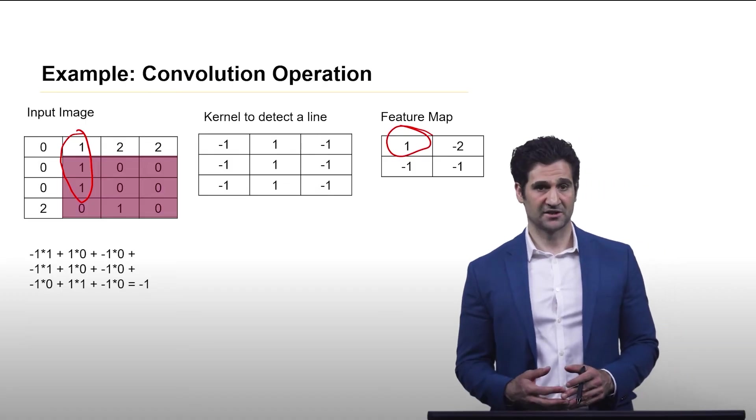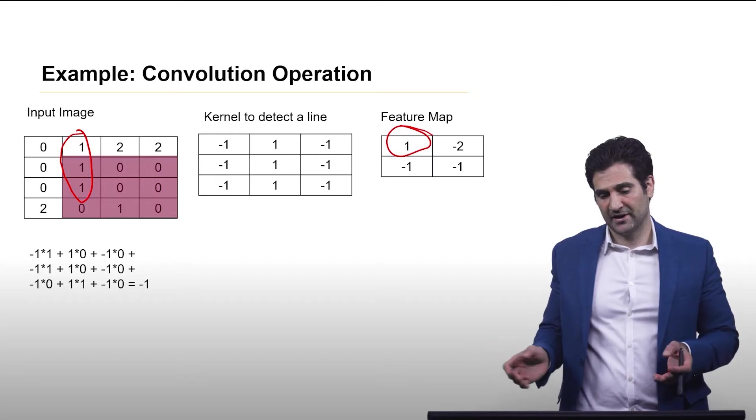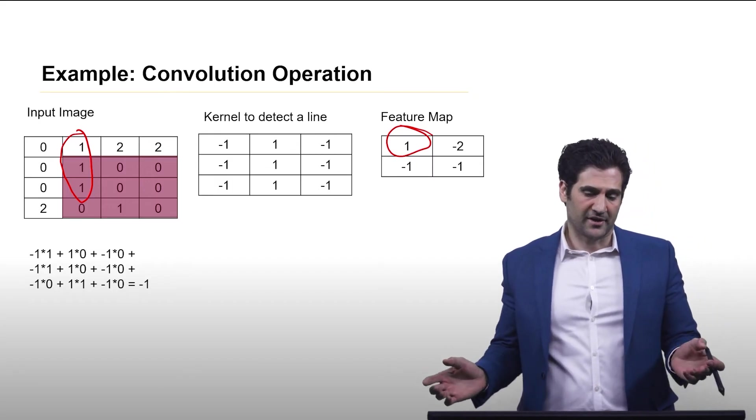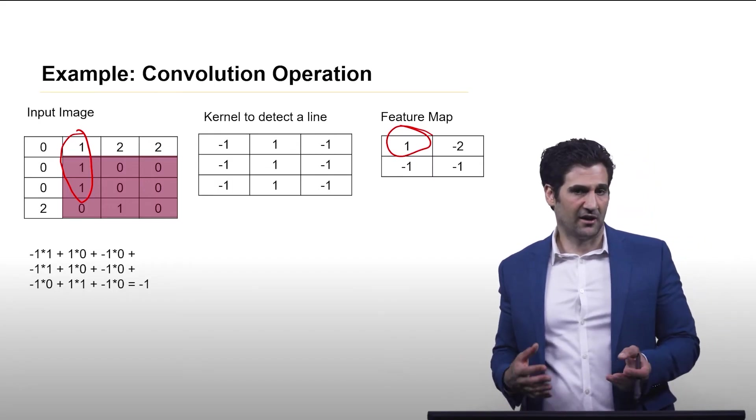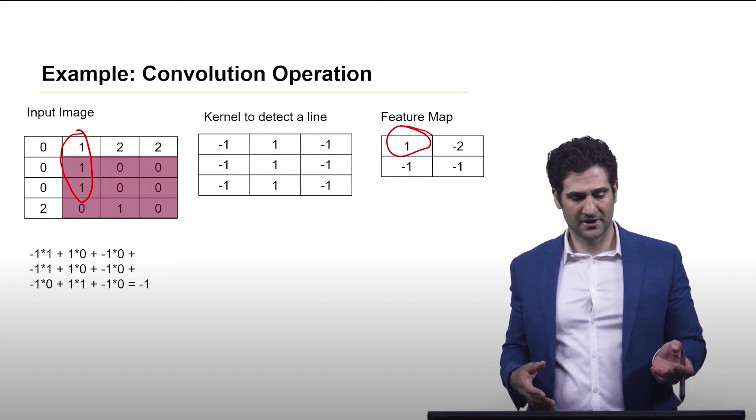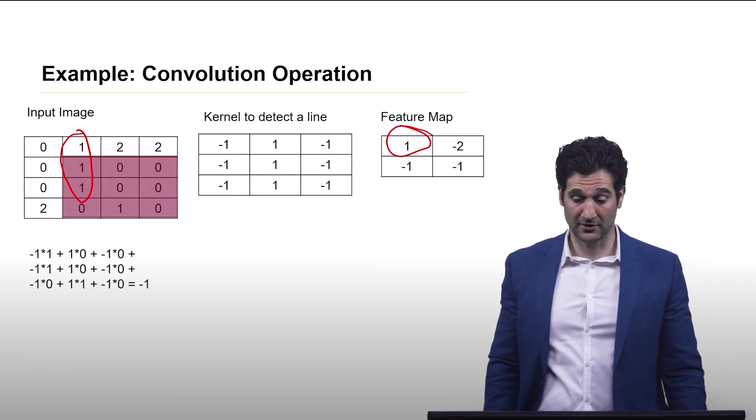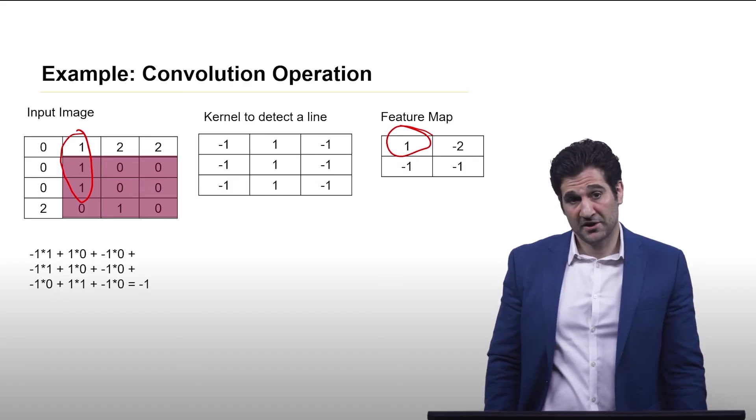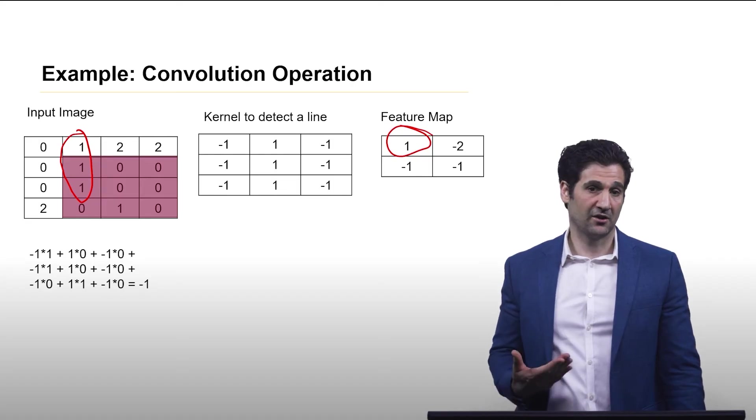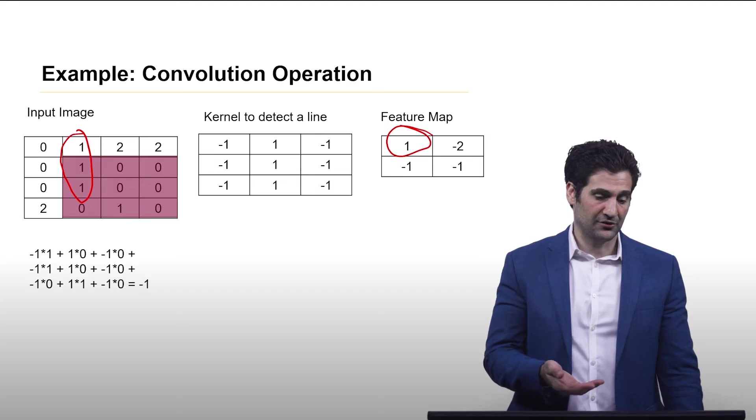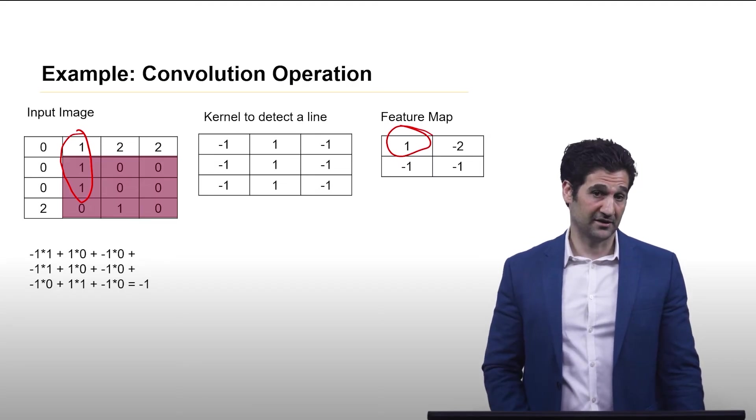Now there are techniques you may say, wait a minute, that line seems to extend a little bit into the quadrant right below it. Then you would have a point there. There's a technique called padding that probably would provide a different result here.